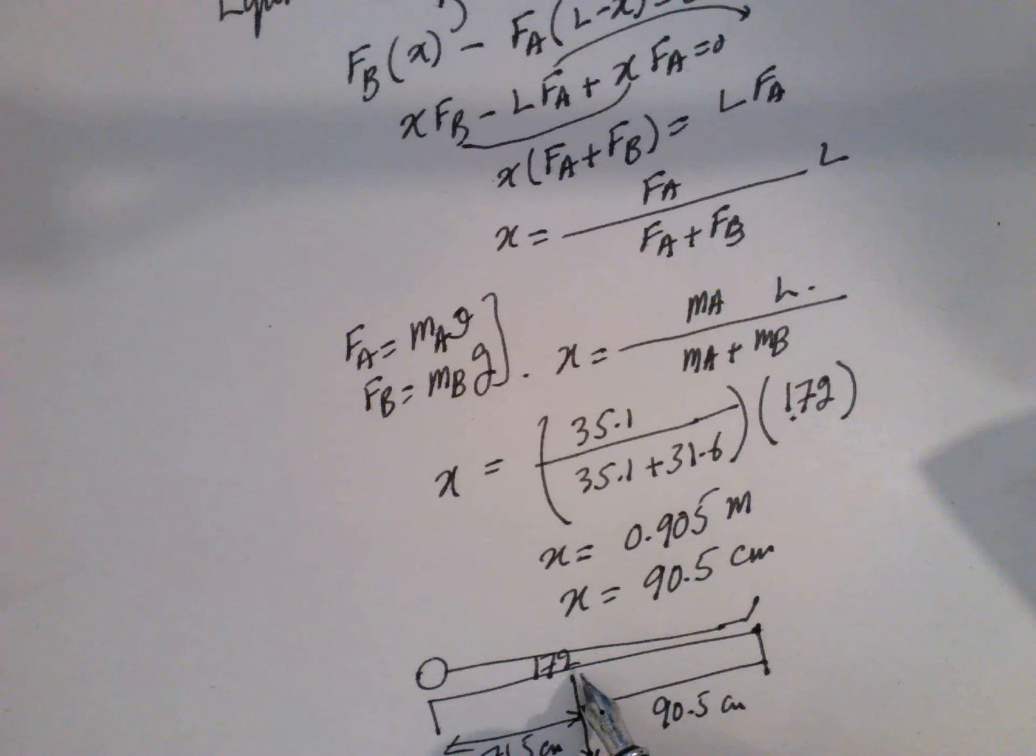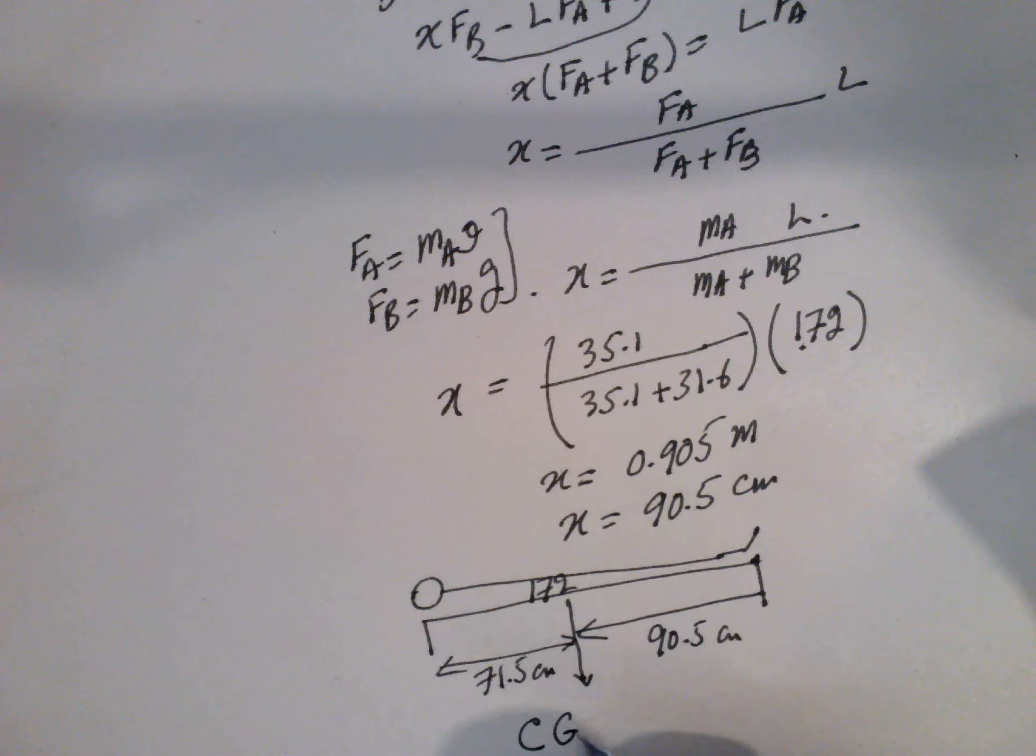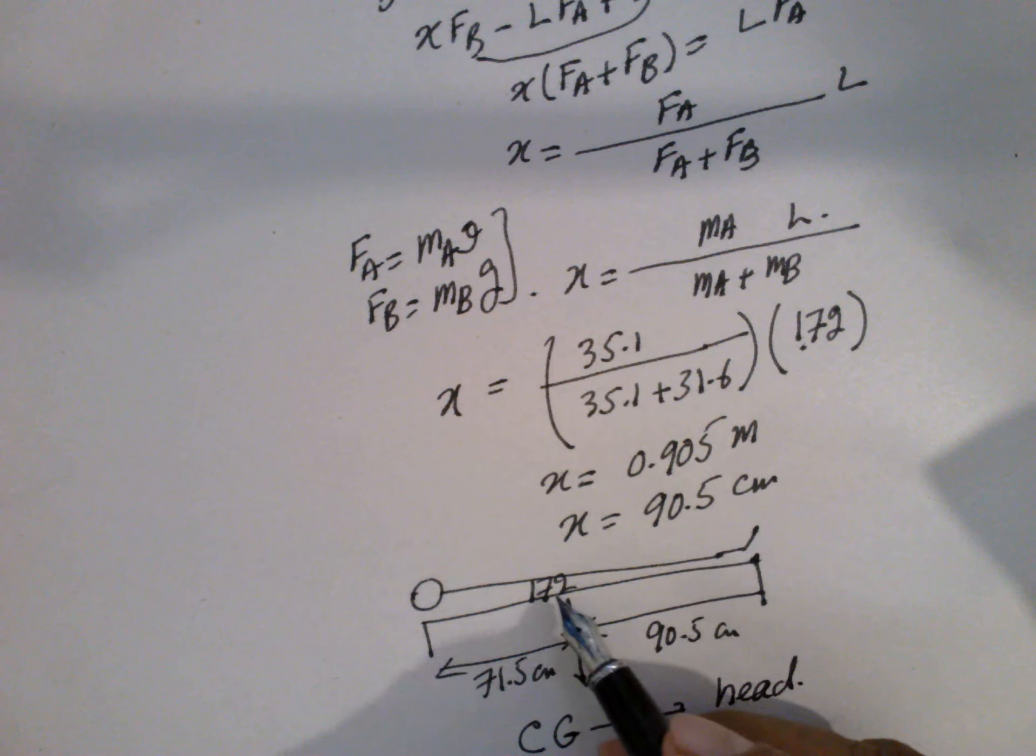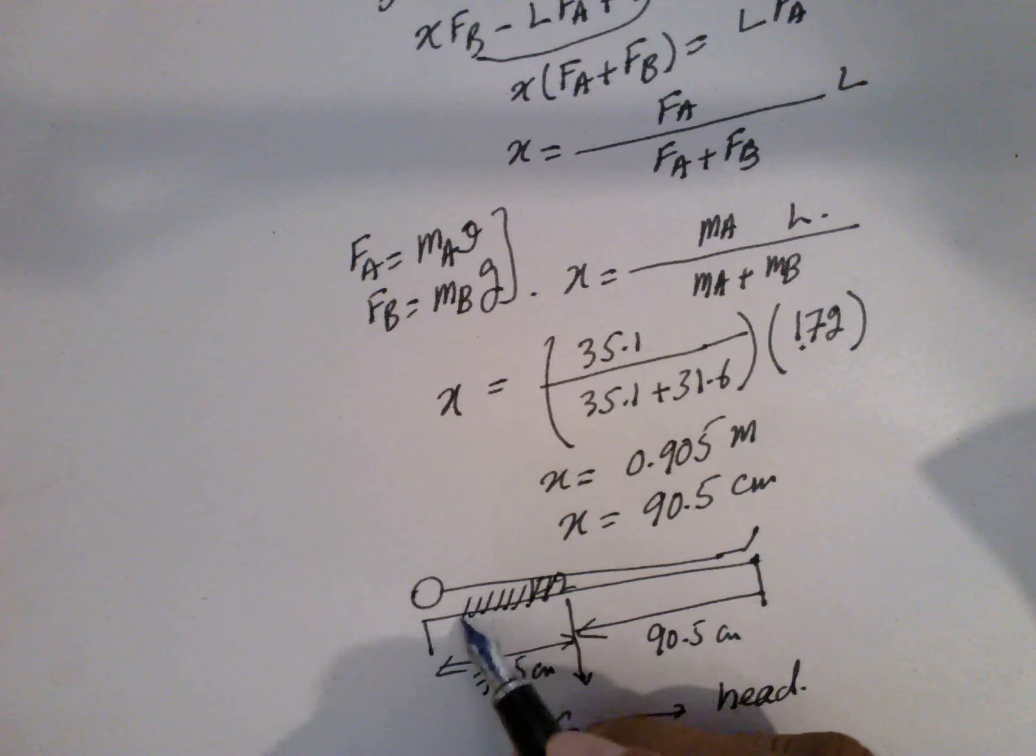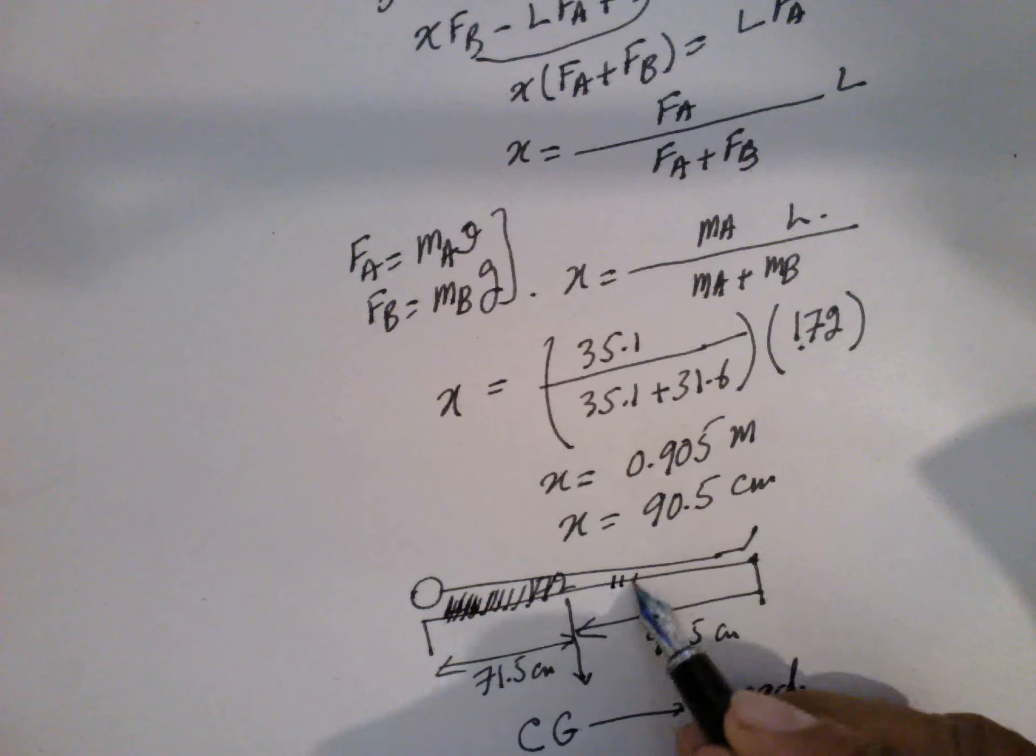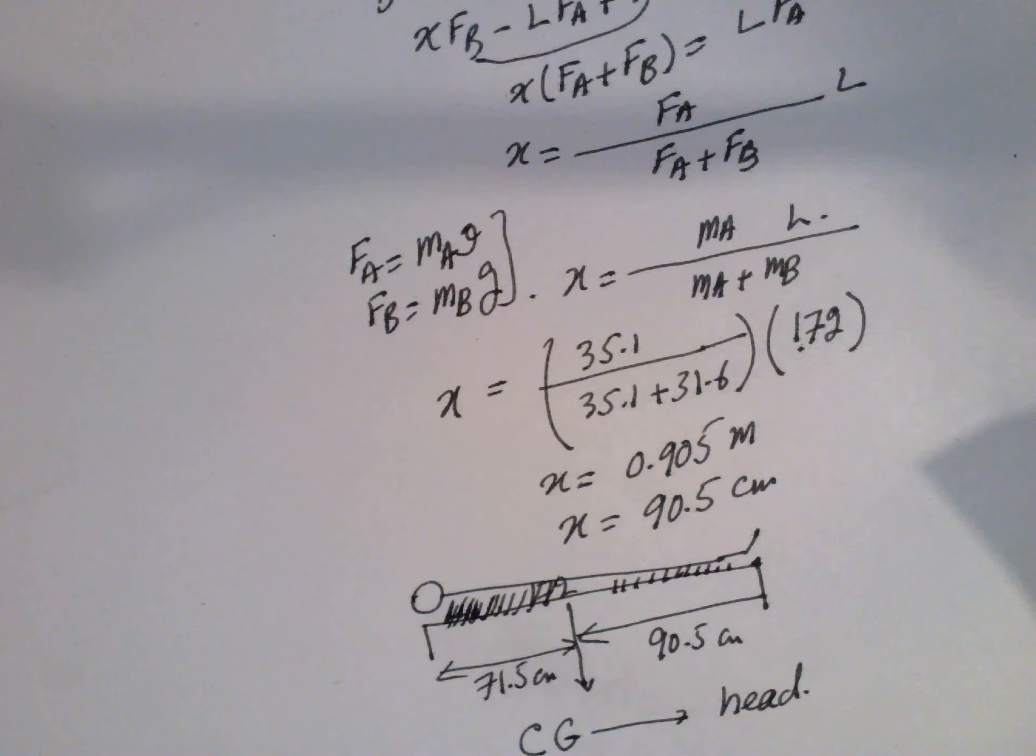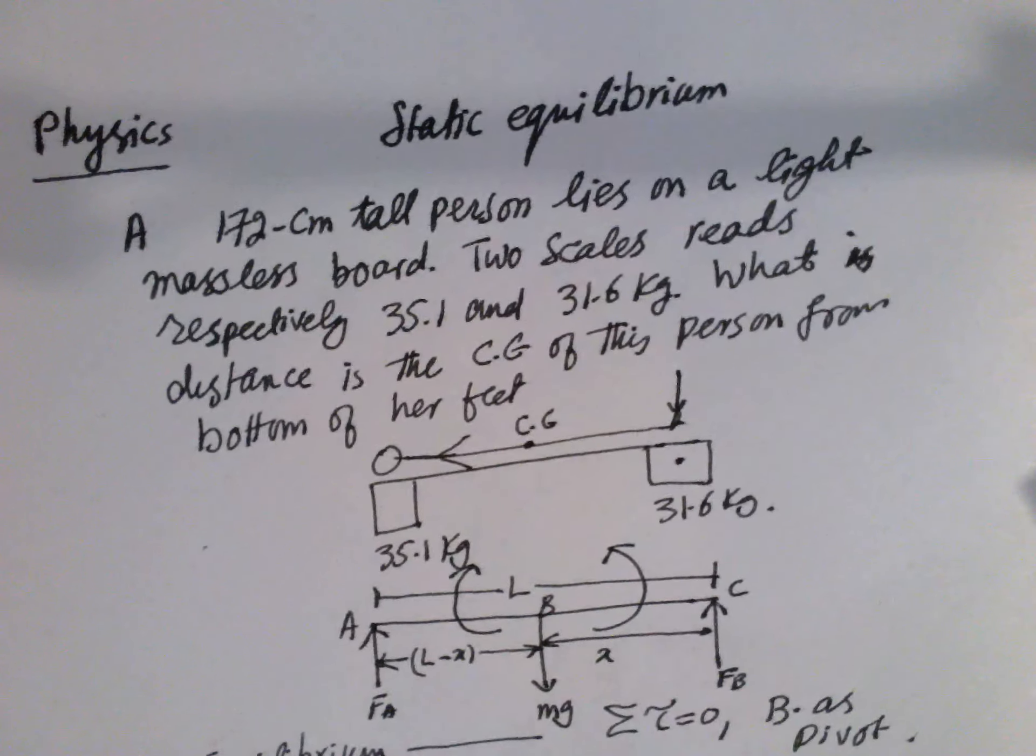So it's more toward the head. Center of gravity is more toward head because the denser part is here, and less dense part is here, and less dense part on the feet. So this is the question and this is the answer.